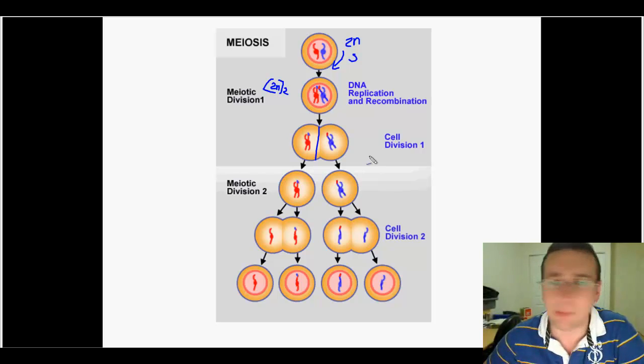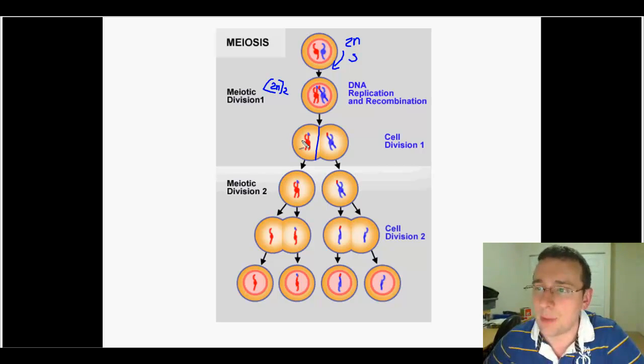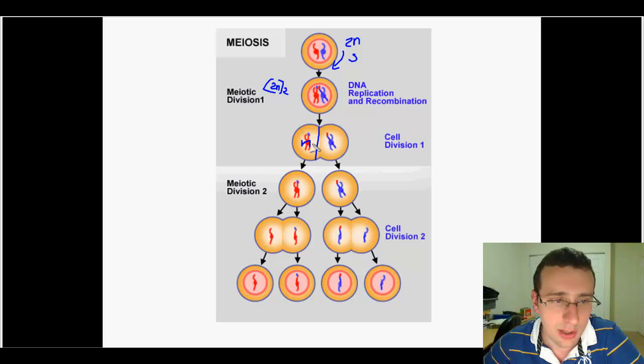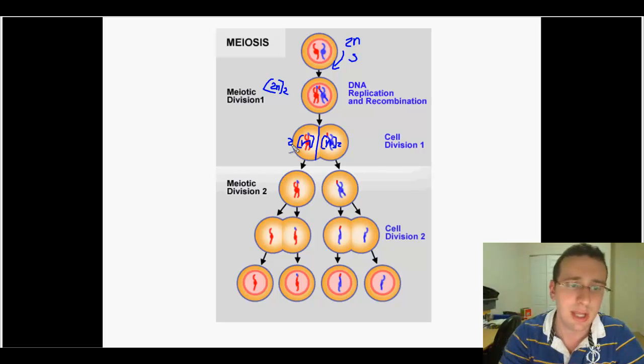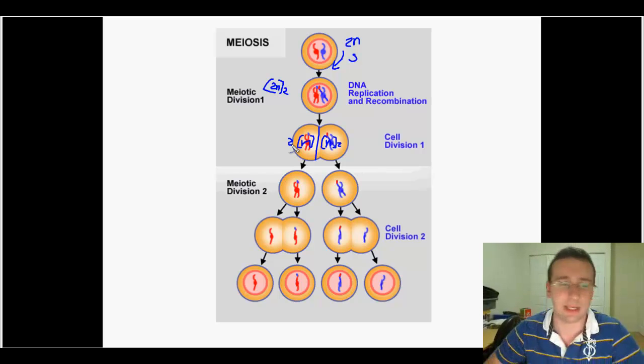During anaphase 1, you're going to separate those homologues. So now you no longer have two copies of each type. Technically, you only have one copy of each type. So now this became an N cell. But since each of these chromosomes carries two copies of the same thing, technically what you have is a doubled N cell. So a double N cell, which is not the same thing as a 2N cell. 2N refers to having two different copies of the same type of chromosome. This is basically the same chromosome twice.